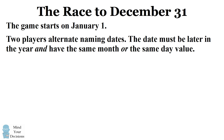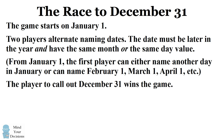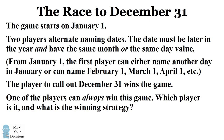So for example, the game starts on January 1. The first player can either name a date that's later in January, or name one of the future months but have the same day value of 1. Whichever date the first player calls out, the second player has to abide by the same restriction. You and the other player keep calling out dates, and the player to call out December 31 wins the game. The question is: which player can always win, and what is the winning strategy?